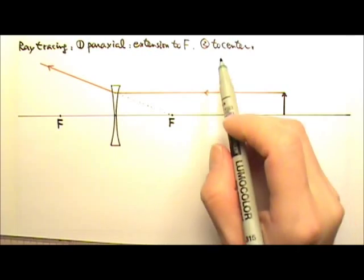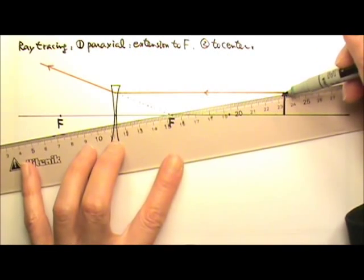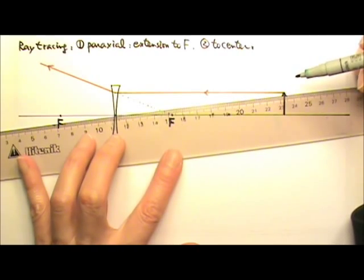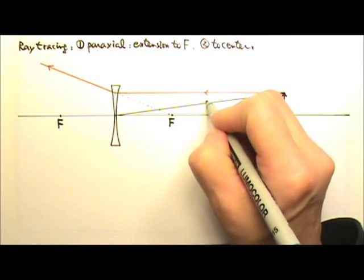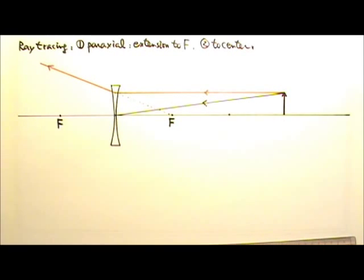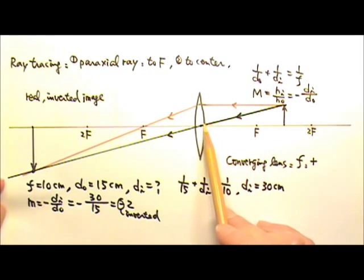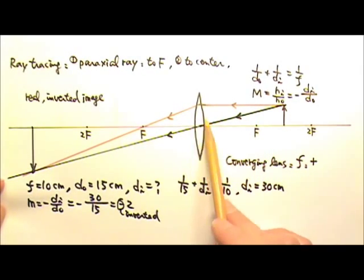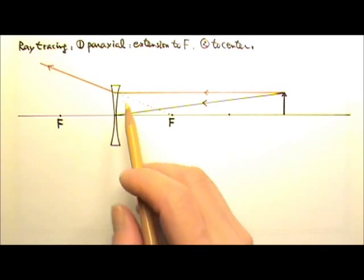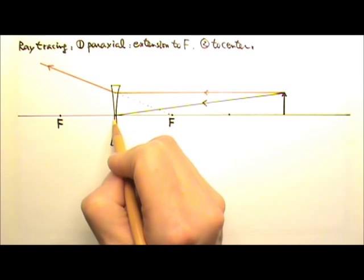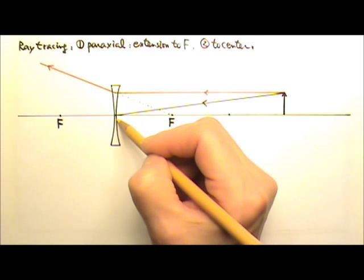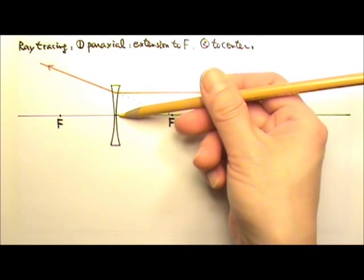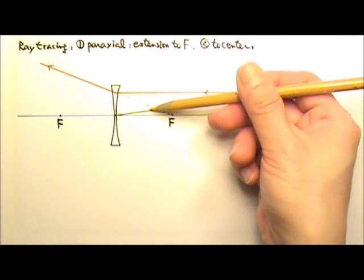The second ray I am going to draw would go to the center of the lens. So from here to the center of the lens. Where would this ray go? Just like the ray that goes through the center of the converging lens. The diverging lens over here has the two sides almost parallel with each other. That means this ray essentially is going through a rectangular block of glass.